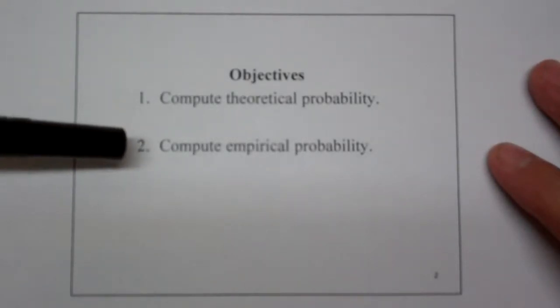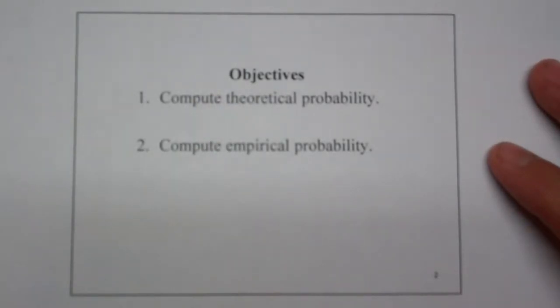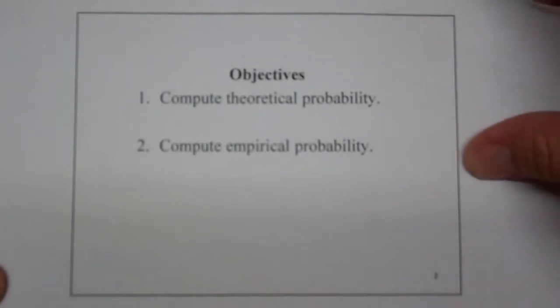Our two objectives are to understand what a theoretical probability is and calculate a few simple ones, and then find out what an empirical probability is and compute a few simple ones. In this particular video, we're not really going to get into too much of combinations and permutations, but as you can see in future videos, probability is based very heavily on the counting principle stuff that we did beforehand.